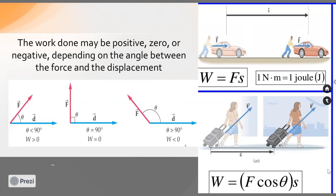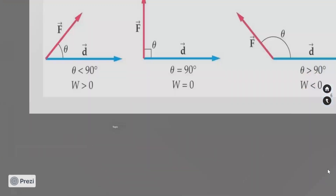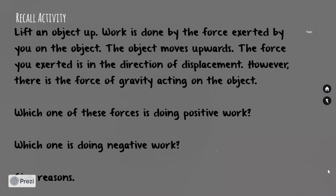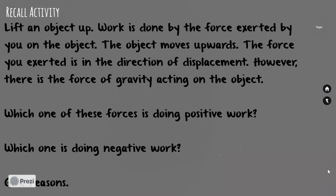To summarize: if the angle between force and displacement is less than 90 degrees, work is positive; equal to 90 degrees, work is zero; and greater than 90 degrees, work is negative.